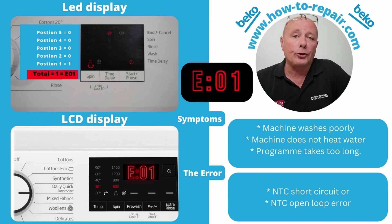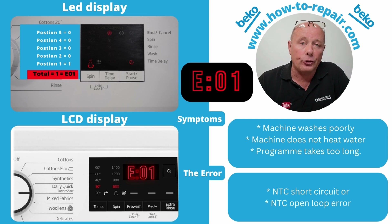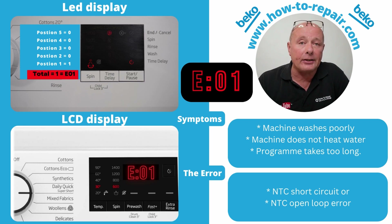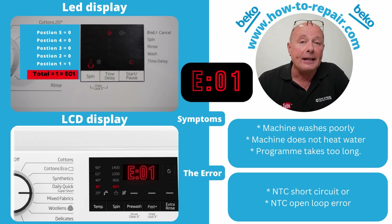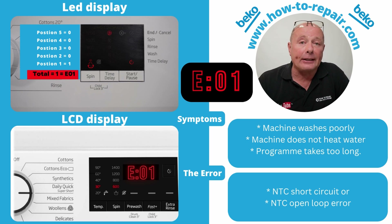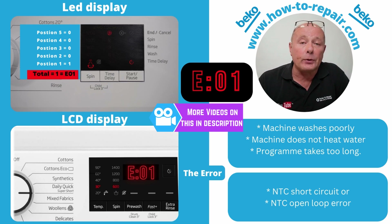Error code 1 normally means your washing machine is washing poorly, taking a long time, or not heating the water. E01 is an NTC sensor fault — it can be a fault with the NTC sensor itself, the wiring to it, or an open loop circuit on the circuit board. On the LCD it shows as E01; on the LED version the no spin symbol illuminates, giving a value of 1. A separate video covers testing this component.